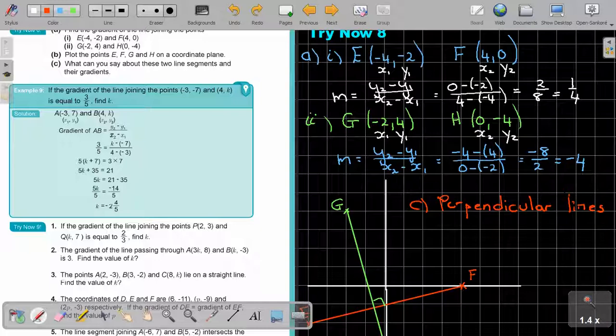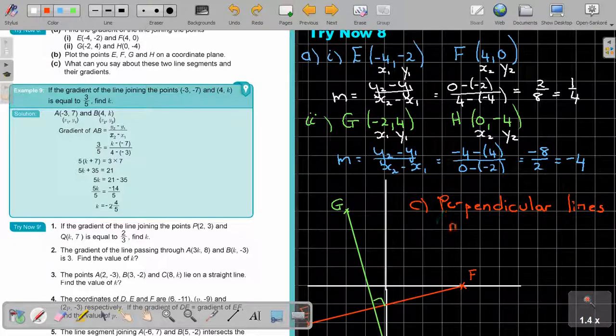And then you can say, why do you see that this, the reciprocal of a quarter, will be 4. And do you see this is a positive, and this is a negative. So we always write it like this. We just say, m1 multiply m2 will be equal to negative 1.